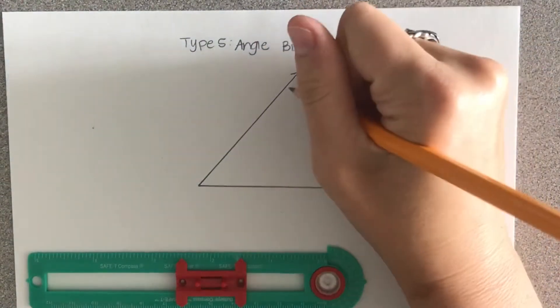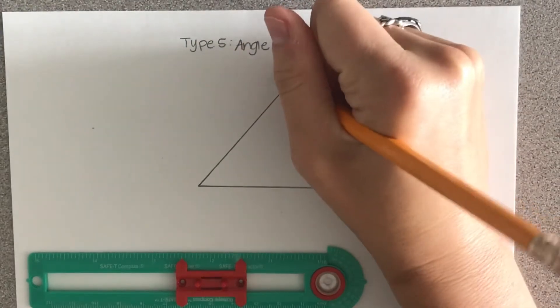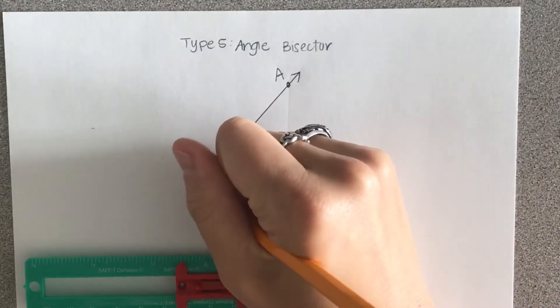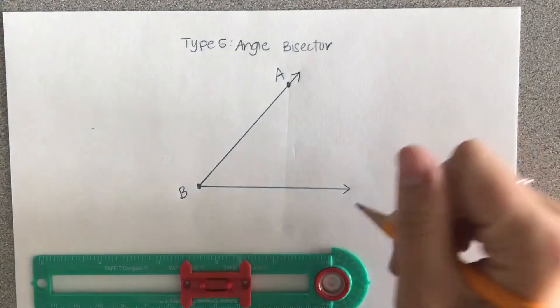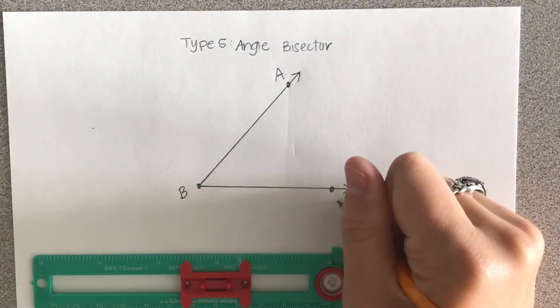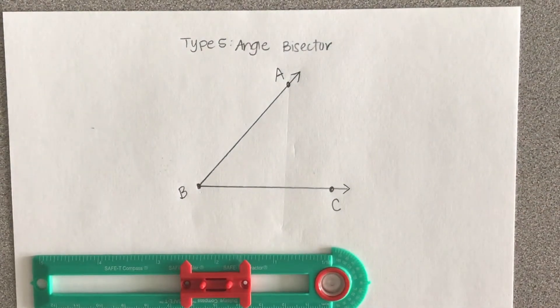I'm going to pick a point that's on the top ray and call that point A. My vertex where they meet is point B, and then another point on the other ray is point C.